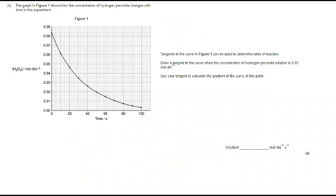Okay let's move on to part B. We've got a graph here and tangents to the curve can be used to determine rates of reaction. Draw a tangent to the curve when the concentration of hydrogen peroxide is 0.05 mol dm to the minus 3. Use that to calculate the gradient of the curve at this point. So remember when you draw a tangent it should touch the curve at the point that we are measuring and only at the point that we are measuring. It should not cross the line. It should not touch it again.